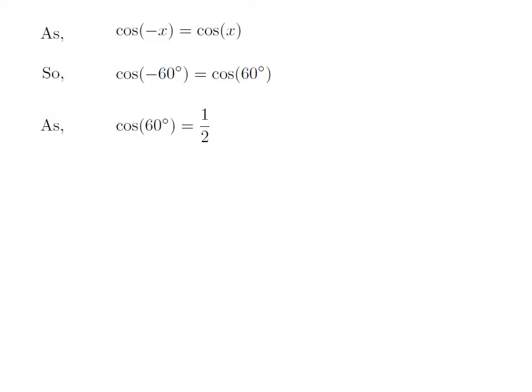We know the value of cosine of 60 degrees is equal to one half. So we get the value of cosine of minus 60 degrees is equal to one half.